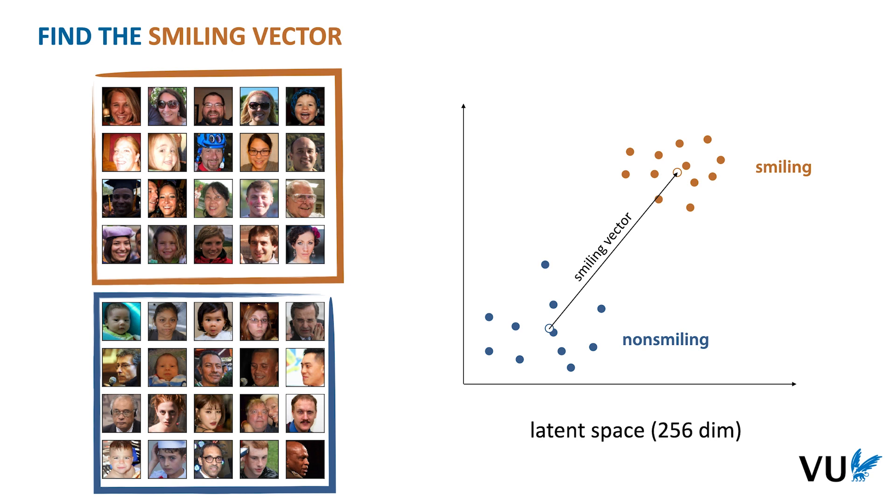This is one big benefit of autoencoders. We can train them on unlabeled data, which is cheap, and then use only a very small number of labeled examples to annotate the latent space. In other words, autoencoders are a great way to do semi-supervised learning.